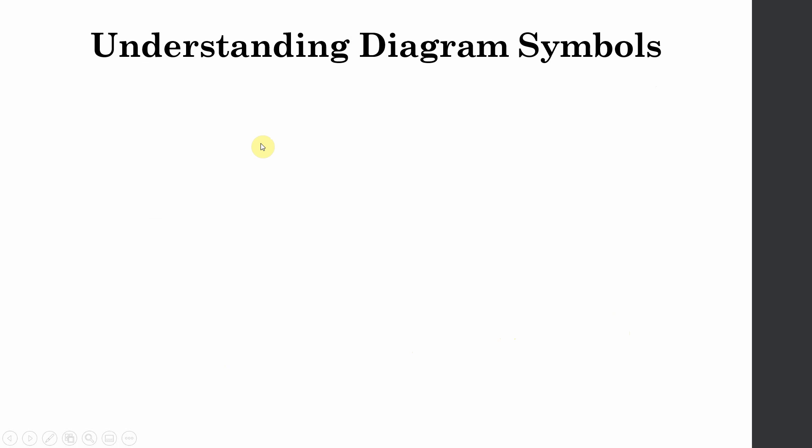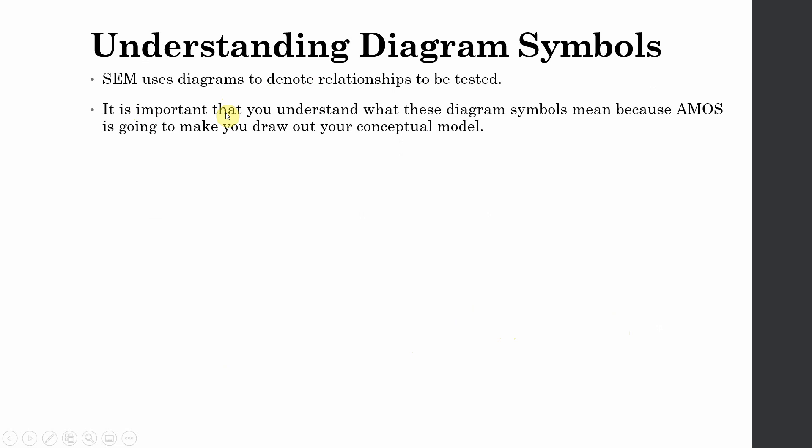There are different diagrams and symbols that one has to understand before using AMOS. SEM uses diagrams to denote relationships that are to be tested. It is important that you understand what these diagram symbols mean because AMOS is going to make you draw out your conceptual model.